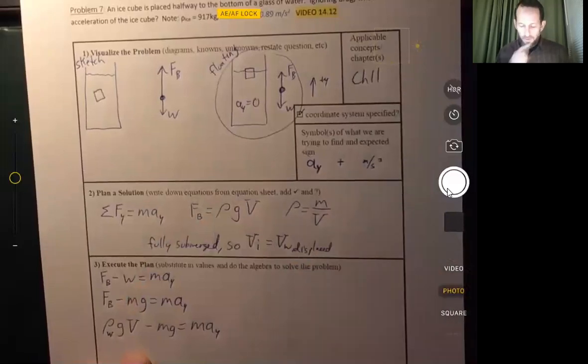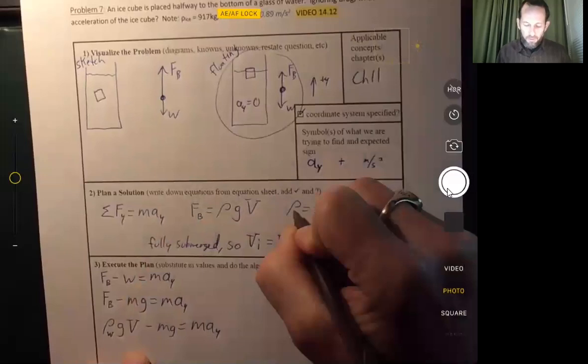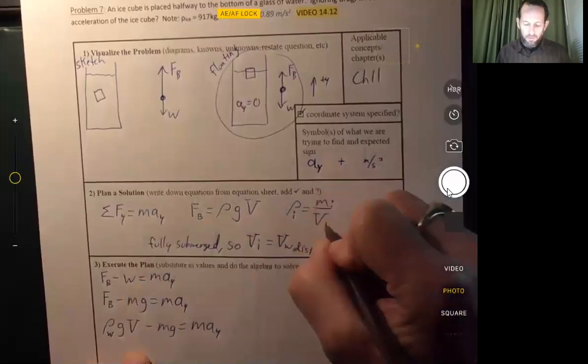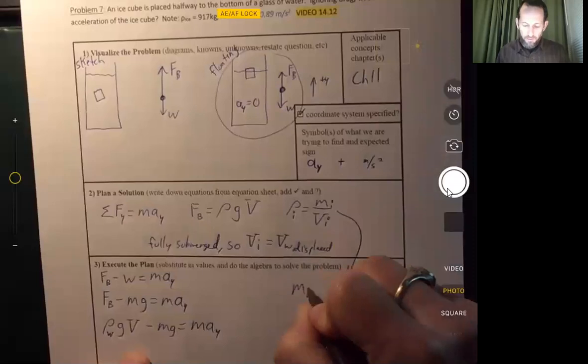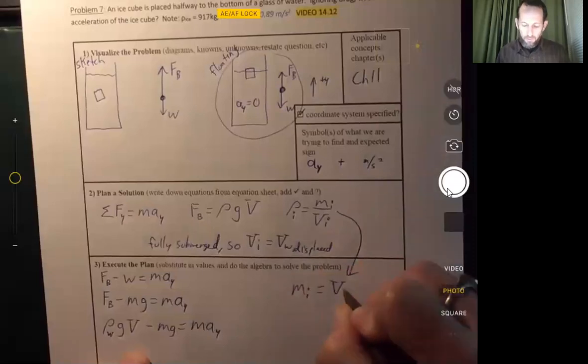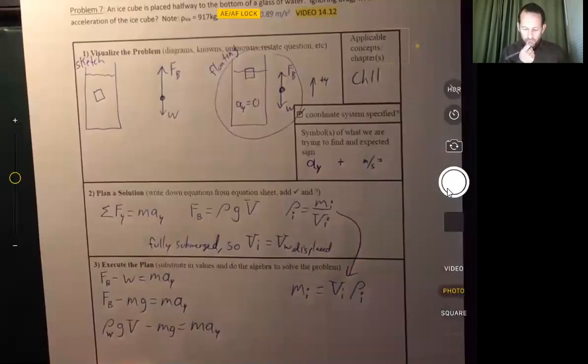Volume of ice equals volume of water displaced. All right. For the ice cube, we could analyze this. So we can take this and we can say the mass of the ice cube is equal to the volume of the ice cube times the density of the ice cube. So we do have that as a possibility.